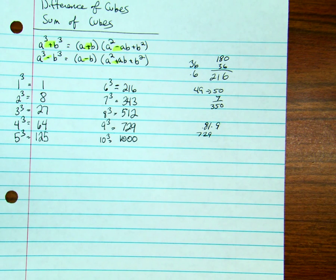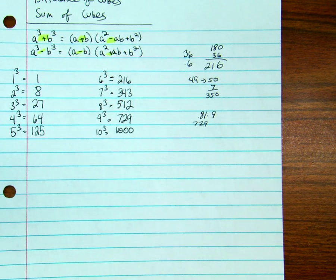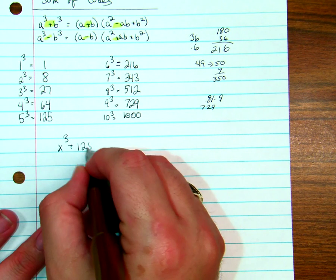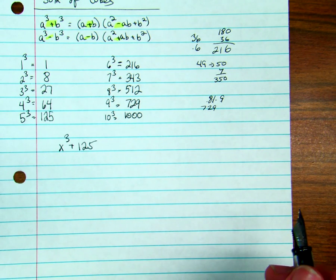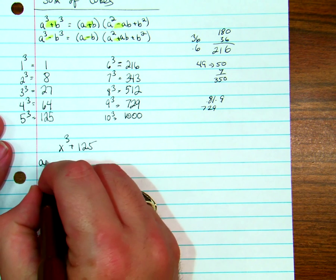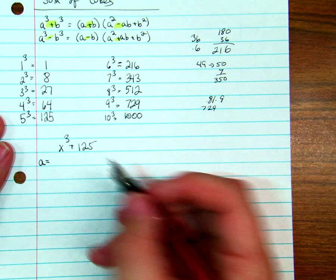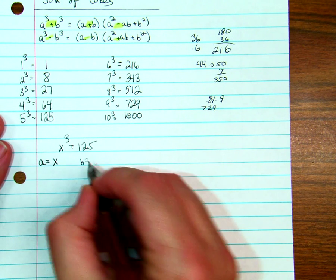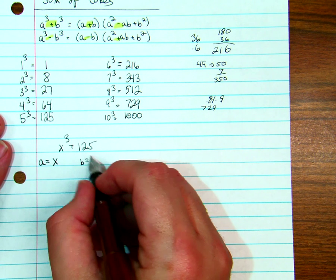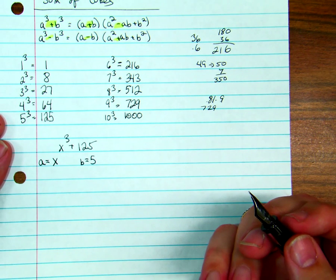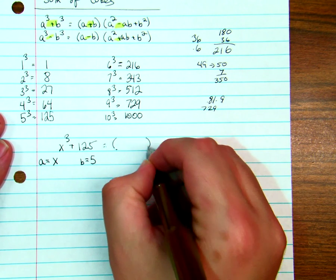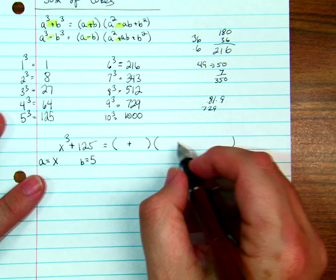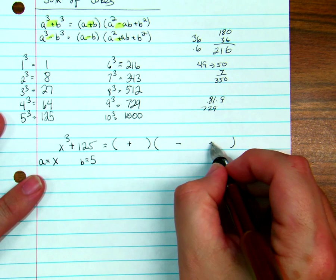Now this is a very straightforward process because we have formulas. If I have x cubed plus 125, the easiest way to do this is to say, what's my a? What's being cubed to get x cubed? What's being cubed to get 125? So I have 5. Now, since this is a plus here, I'm going to get a plus here.